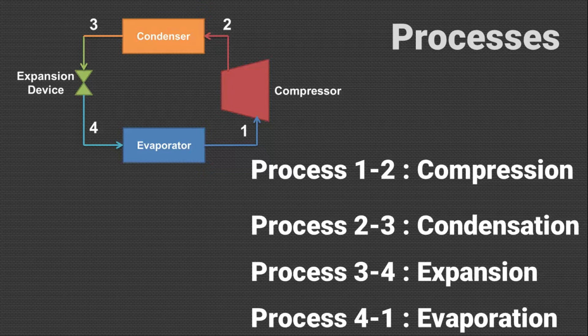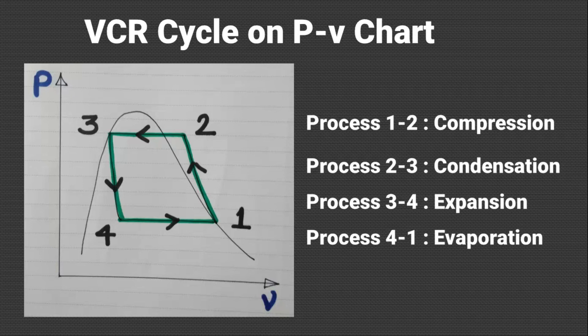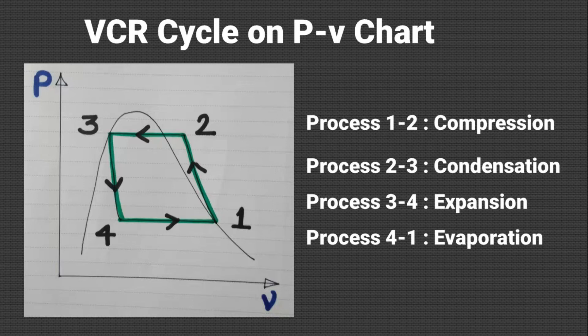Let us see how this cycle can be denoted on various thermodynamic charts. The first one is the PV chart. The VCR cycle is shown on a pressure and specific volume chart as shown in the slide. Process 1 to 2 is a compression process in which the refrigerant is compressed and its specific volume decreases while its pressure increases from P1 to P2. The refrigerant at high pressure is then condensed in the condenser, shown by process 2 to 3. The refrigerant then expands through the expansion valve, shown by process 3 to 4, and is evaporated in the evaporator at constant pressure, shown by process 4 to 1.